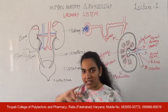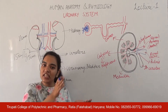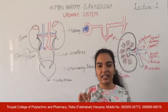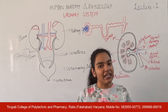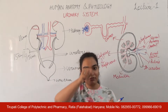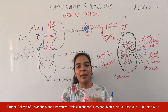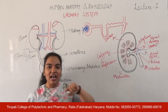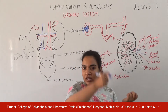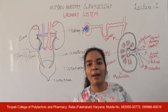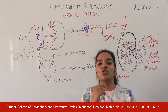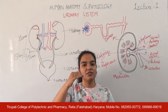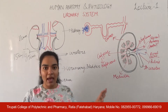We have two kidneys present on the posterior abdominal wall, on the back side of our body. Their position is adjacent to the vertebrae, one on each side. The kidneys extend from the last thoracic vertebra to the third lumbar vertebra. So the last thoracic vertebra and the third lumbar vertebra mark the position of our kidneys.